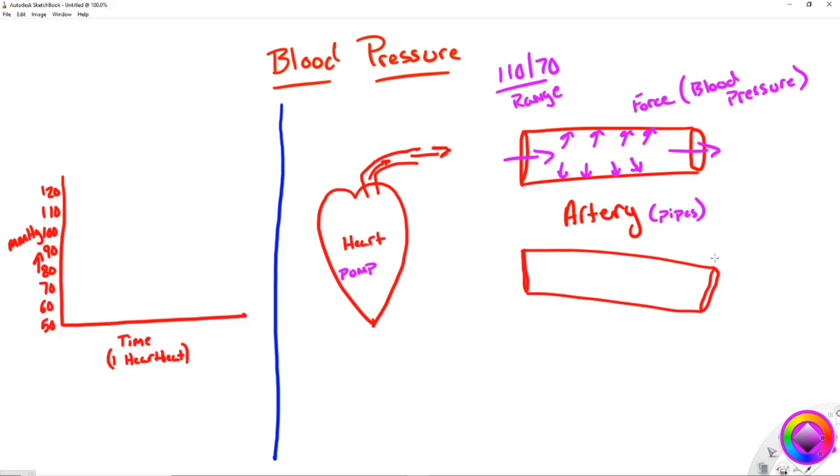We're going to get into the whole concept of why time and place are very important in a second. So just keep those on the back burner. As the heart contracts, it's pushing more blood out into the pipes, and it's going to increase the force pressed against these artery walls. This is what we call systole, the time period of systole. And we get our systolic blood pressure number from this systole. So we get our 110.